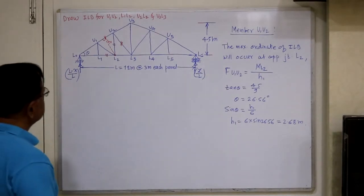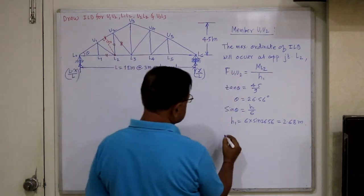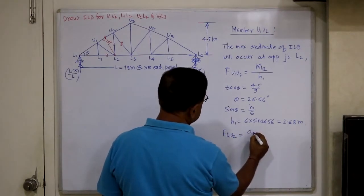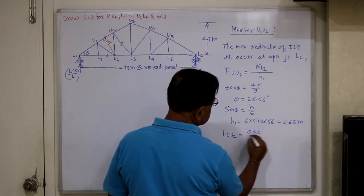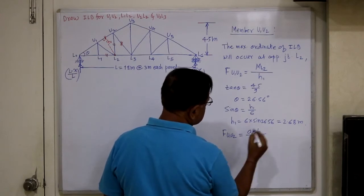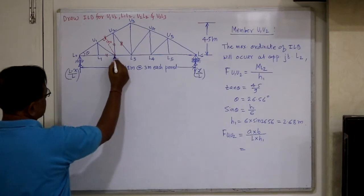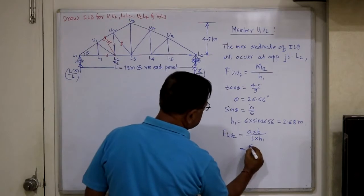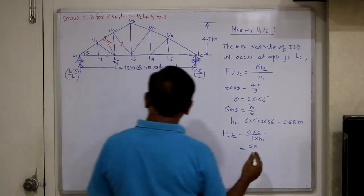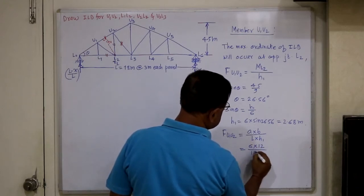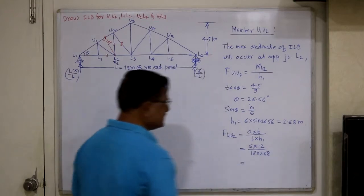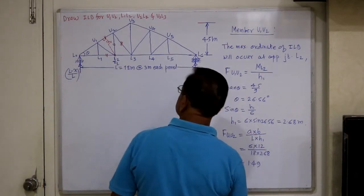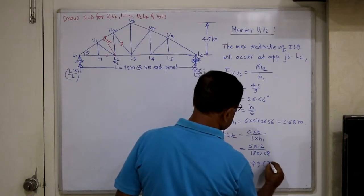Once we know the perpendicular distance H1 between the member and the opposite joint, force F in U1-U2 equals the moment at the joint, which is A times B divided by span, divided by H1. When the unit load is placed at L2, A is 6 meters and B is 12 meters, divided by total span 18 into H1 of 2.68. This gives a value of 1.49. Since this is a top chord member, the nature of this force will be compression.